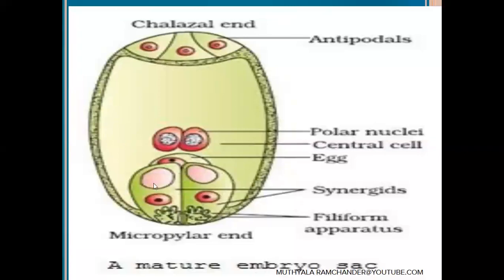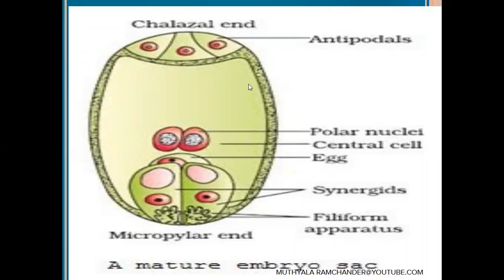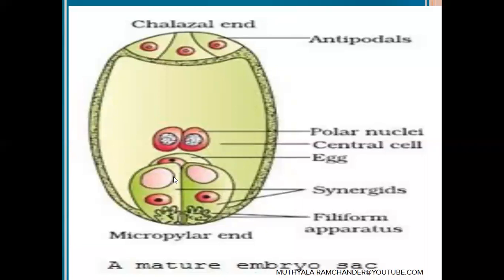The embryo sac is in a haploid condition. It is present at the micropylar region of the ovule and is covered with a thin plasma membrane made with phospholipids and protein chemicals. Inside the haploid embryo sac, cells are arranged in a 3+2+3 arrangement.